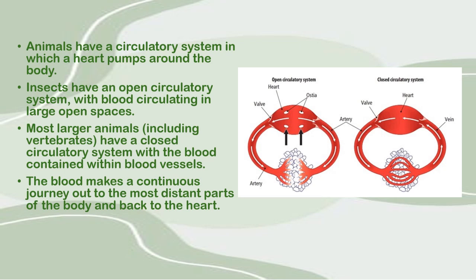Some organisms are small and don't really need a circulatory system — diffusion would be more efficient. However, for larger organisms, efficient transport of oxygen and nutrients cannot take place through an open circulatory system. They are much more efficient with a closed circulatory system, which is why larger animals have a closed circulatory system and smaller organisms have an open circulatory system.